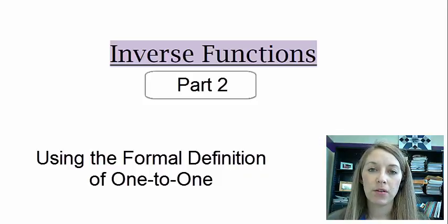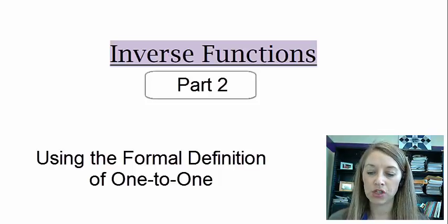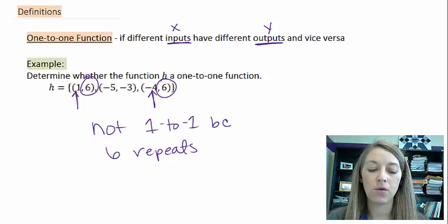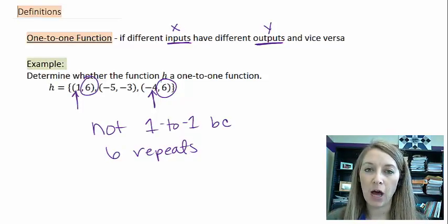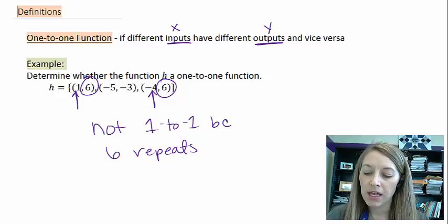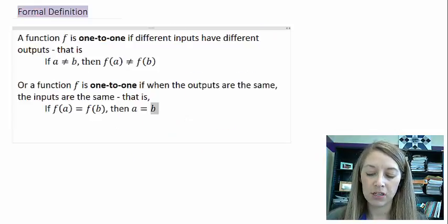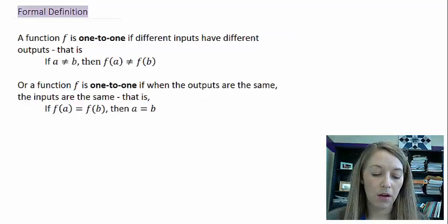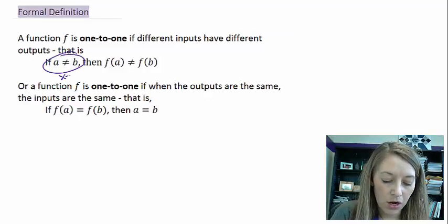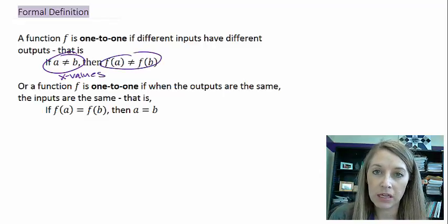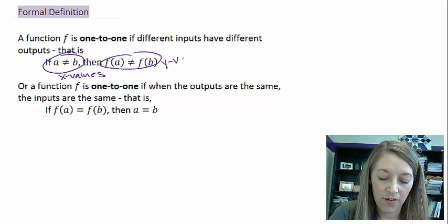In the last video, we learned about the definitions of inverse functions and one-to-one functions. We first learned the informal definition of the one-to-one function, saying that different inputs have to have different outputs and vice versa. And then we learned the formal definition, which you see right here. If a is not equal to b, those are our x values, then f of a is not equal to f of b, which is our y values.